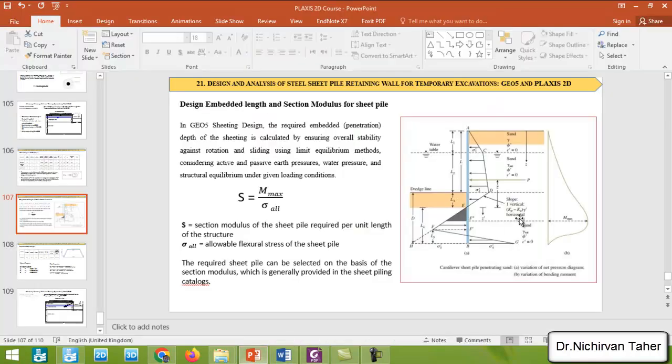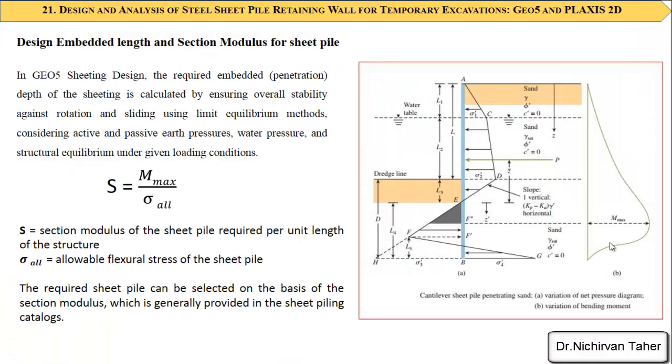And after calculating the maximum moment acting on the sheet pile wall, we can find the cross section of the sheet pile wall based on the maximum moment and the allowable stress of the structure. For example, if this is a steel sheet pile wall, the allowable stress of the steel is known and given by a factory.